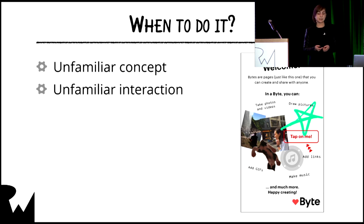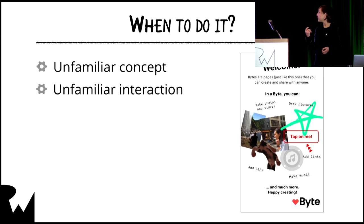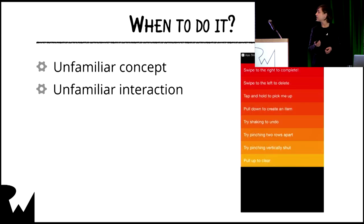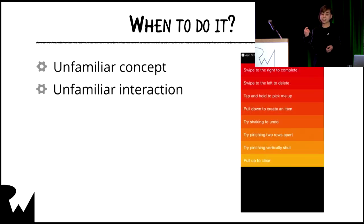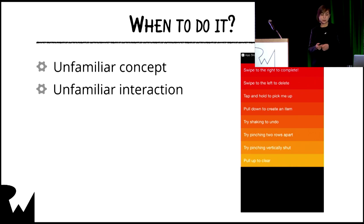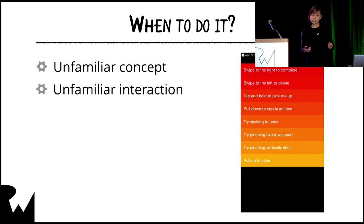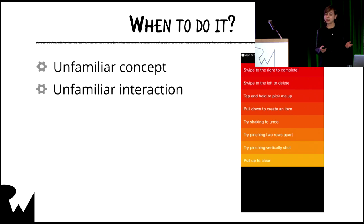The second situation is unfamiliar interactions. For example, like Clear — Clear is a to-do and reminders app that makes clever use of gestures, like pinching vertically, pinching two cells together, or shaking, to simplify managing and organizing your to-do lists.